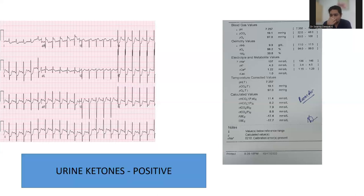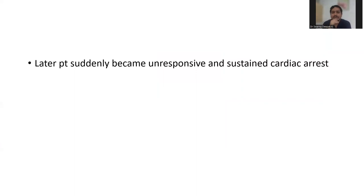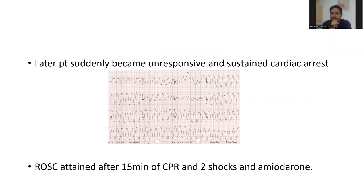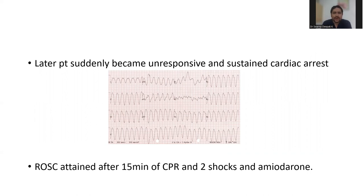Her urine ketone bodies are also positive, so in a patient with DKA and this presentation, all possibilities are there. When you are stressed with a sick patient and don't have much time, you need to simplify the approach with point of care ultrasound. Unfortunately, this patient became unresponsive and had a cardiac arrest — she developed a broad complex tachycardia, ventricular tachycardia. They delivered shock and amiodarone and resuscitated after 15 minutes of CPR. You can also use point of care ultrasound in a patient who has had a cardiac arrest.